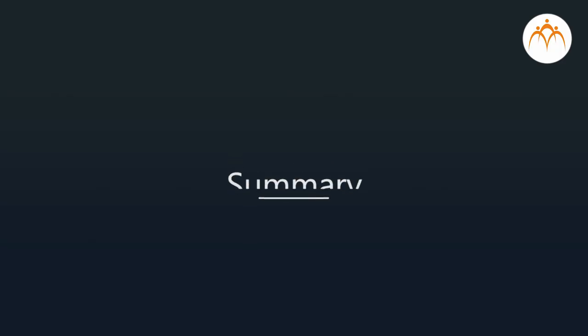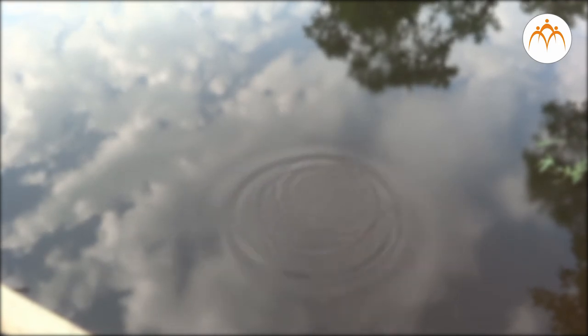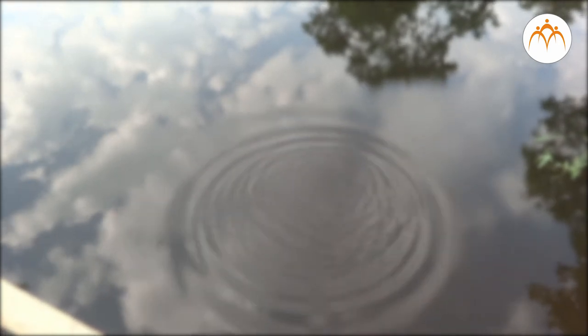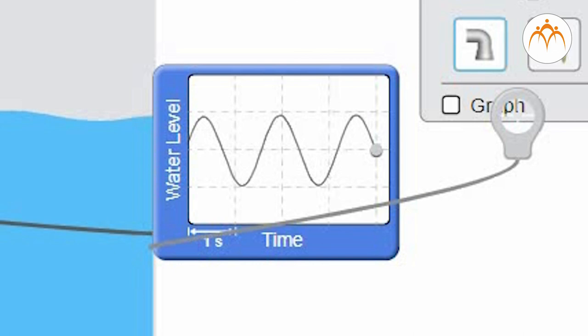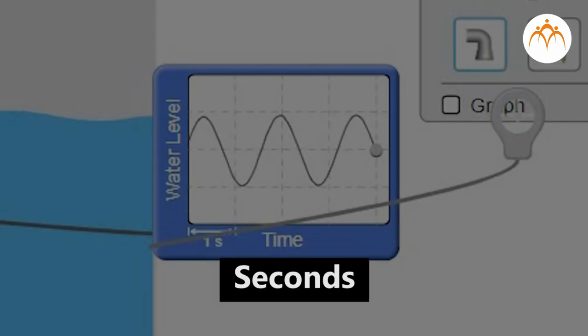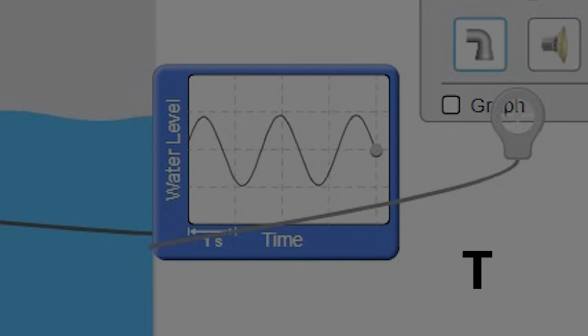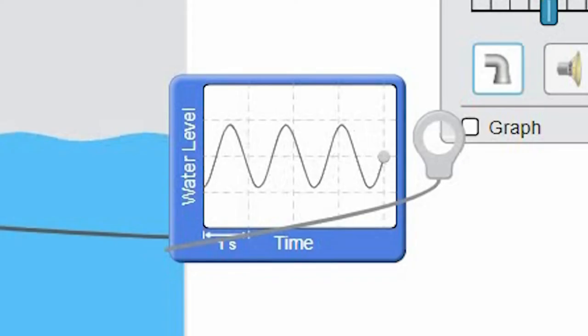We discussed important characteristics of waves. The time it takes for one particle to move up, move down and then return to its original position is called the period. It is measured in seconds. It is denoted with the symbol capital T. Frequency of the wave is the number of cycles that are completed in a certain amount of time.